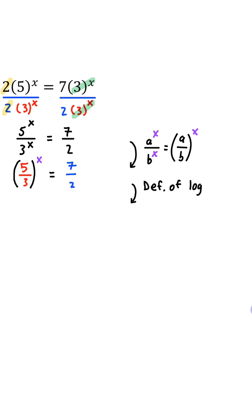And now we're going to use the definition of a log. If b to the power a is equal to n, then a is equal to log base b of n. So x is equal to log, the base of this exponent is 5 thirds, so the base of the log is going to be 5 thirds of 7 halves.